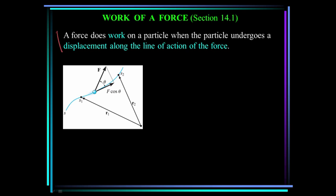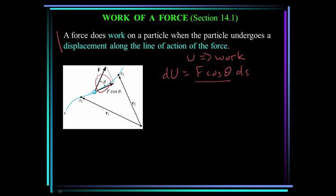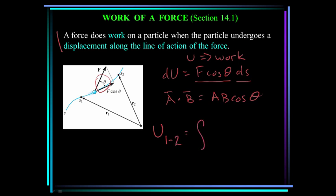Work is defined as a product of force and displacement components acting in the same direction. So if the angle between the force and the displacement vector is theta, the increment of work, dU, is equal to F cosine theta times dS. Now U is work. So the component of the force along the direction of motion times the displacement is equal to work. By using the definition of a dot product — A dot B equals the magnitude of A times the magnitude of B times the cosine of the angle between them — if we use this definition and integrate, we can write the total work between points 1 and 2 is equal to the integral of F·dr from R1 to R2.